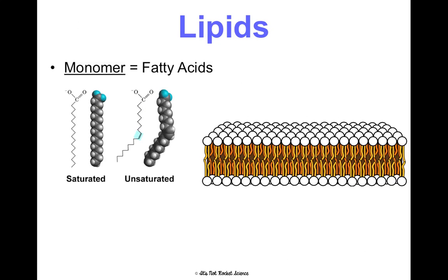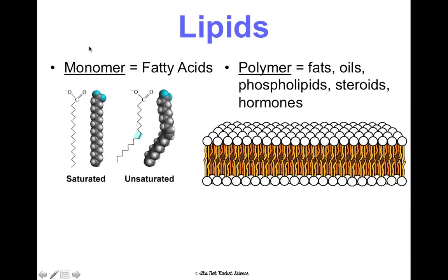The monomer of lipids — there's not really a true monomer or polymer, but in general most lipids are made of fatty acids, which can be saturated or unsaturated. The polymer can be fats, oils, phospholipids, steroids, hormones — so many different things. So again, not a really clear monomer or polymer, but those are some examples.